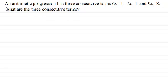So in this example, just to demonstrate how we handle this kind of question, we've got an arithmetic progression, and it has three consecutive terms: 6x plus 1, 7x minus 1, and 9x minus 8. And we're being asked then, what are the three consecutive terms?